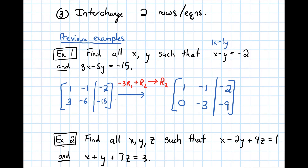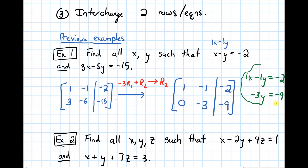From here, we could translate both rows back into equations. The first row corresponds to x minus y equals negative 2, and the second row now gives negative 3 times y equals negative 9, and we could solve these the same way as in the last video.